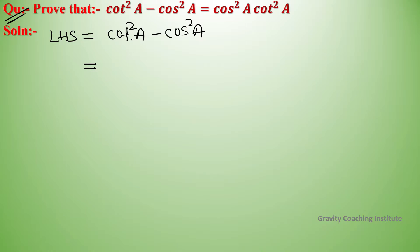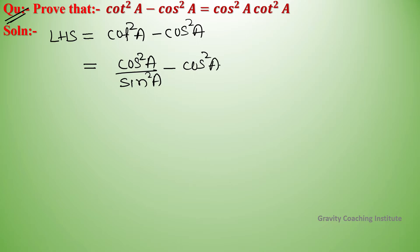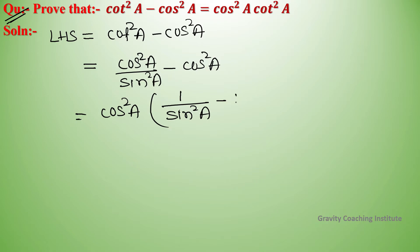We have cot squared a minus cos squared a, where cot squared a equals cos squared a upon sin squared a. Factoring out the common cos squared a, we get cos squared a into 1 upon sin squared a minus 1.